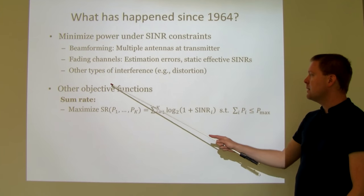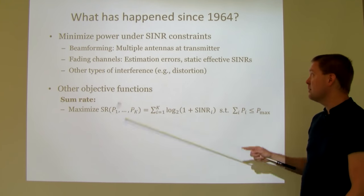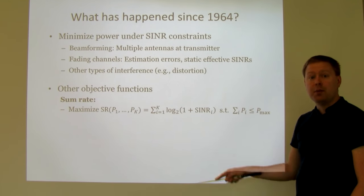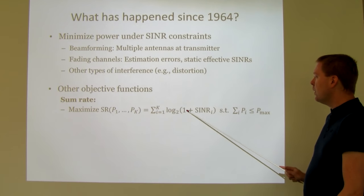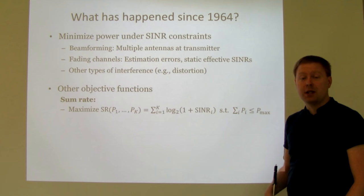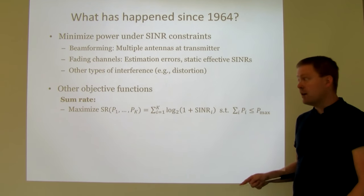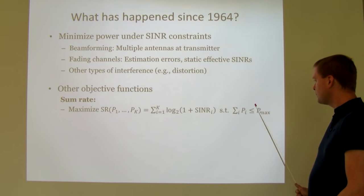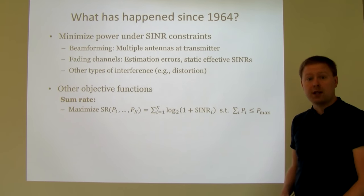People have also considered other objective functions besides minimizing power under SINR constraints, because those constraints may not be known or may be hard to find in reality. One typical approach is to optimize the sum rate: maximize the sum of log2(1 + SINR) over all users, which represents the achievable rate in bits per second per hertz. This is still a function of the transmit powers, and you select them to make the sum as large as possible subject to a total power constraint — either a sum power constraint P_max or individual per-user constraints.